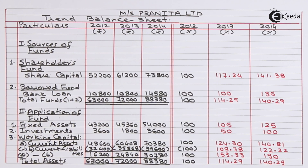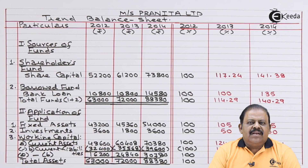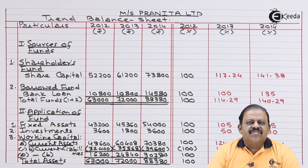Total funds for 2014 equals 140.29 percent. We have prepared vertical income statement and balance sheet and then prepared trend income statement and balance sheet. Thanks for watching this video. Stay tuned with Ikida and subscribe to our channel Ikida. Thank you.